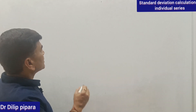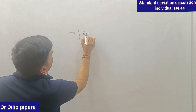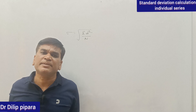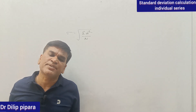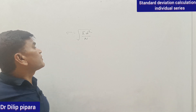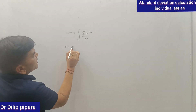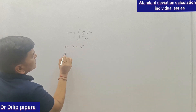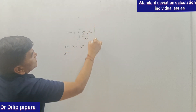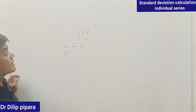In the direct method, we use the formula sigma D squared divided by N for individual series, because in the case of individual series the frequency doesn't apply. So we use the formula sigma D squared divided by N. For calculating D, we do X minus X-bar, then square it, then sum all values. This is the direct method for calculating standard deviation.